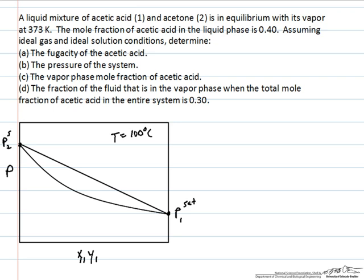This indicates that acetic acid is the less volatile component, and so we expect this to correspond to the saturation pressure of acetic acid. Conversely, this is equal to the saturation pressure of acetone, which is the more volatile component. At the pure component, so at x equals 1 and x equals 0, we expect that the pressure of the system will be equal to the saturation pressure at vapor-liquid equilibrium.